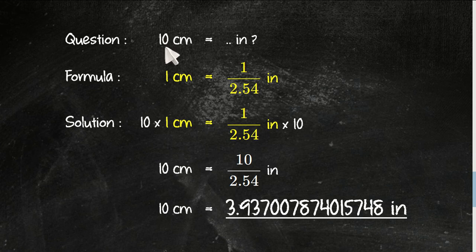So when you have this type of question, you need to put 10 here and another 10 here. 10 times 1 equals 10, exactly like the question: 10 centimeters. Then 1 divided by 2.54 times 10 equals 10 divided by 2.54. Every time you multiply an integer number with a fraction, you just need to multiply this number with this number.